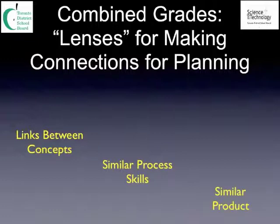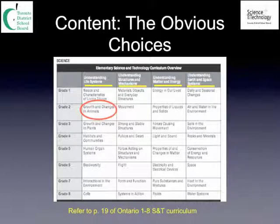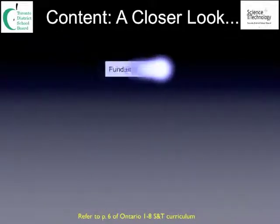When looking at content, the obvious choice is to look within the same strand of the Ontario curriculum. Very often there will be natural connections between the topics, such as in grade 2 growth and changes in animals and grade 3 plants, or grade 4 pulleys and gears and grade 5 forces acting on structures and mechanisms.